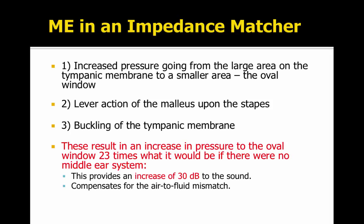This is accomplished, first, by the increased pressure of the large area of the tympanic membrane — all that pressure gets pushed to the much smaller area of the stapes footplate in the oval window. Then there's the lever action of the malleus and the stapes, and the buckling of the tympanic membrane.